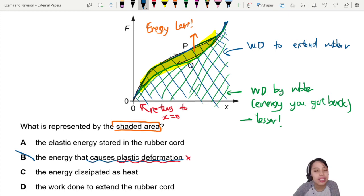Energy dissipated as heat? Yes, we're talking about energy lost. So this is the best choice, but let's look at the rest. Work done to extend rubber cord - we talked about this one here on the top. That's the work done to extend rubber cord. No, that's not it.